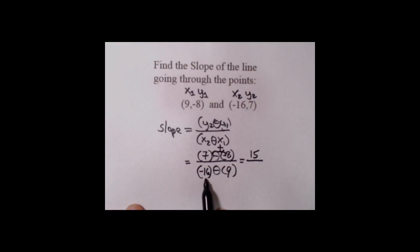What we end up with upstairs: 7 plus 8 is 15. Downstairs, negative 16 minus 9 is negative 25. We can reduce the fraction: 5 goes into 15 three times, 5 goes into 25 five times. We have this minus which makes the slope negative, so put that minus right out in front. The slope of this line is negative three-fifths without ever having to graph it.